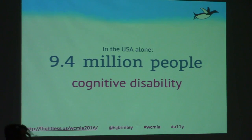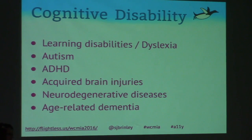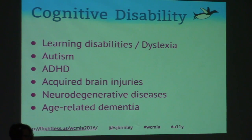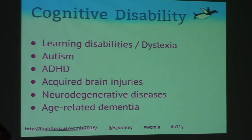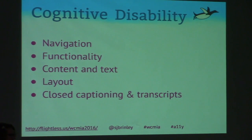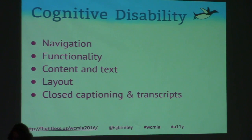Cognitive disabilities: 9.4 million people in the U.S. have cognitive disabilities. Causes include learning disabilities like dyslexia, autism, ADHD, acquired brain injuries, neurodegenerative diseases, and age-related dementia. These people may have trouble focusing on and understanding website content. Ways to assist them include clear navigation, obvious site functionality, well-organized content and layout, closed captioning, and transcripts — many can learn better if they can both listen to a video and read it.